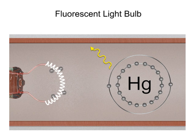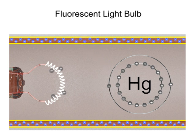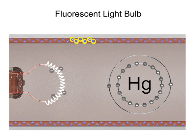This photon is then absorbed by the electrons of the phosphor powder lining the tube. Again, exciting electrons in the process.